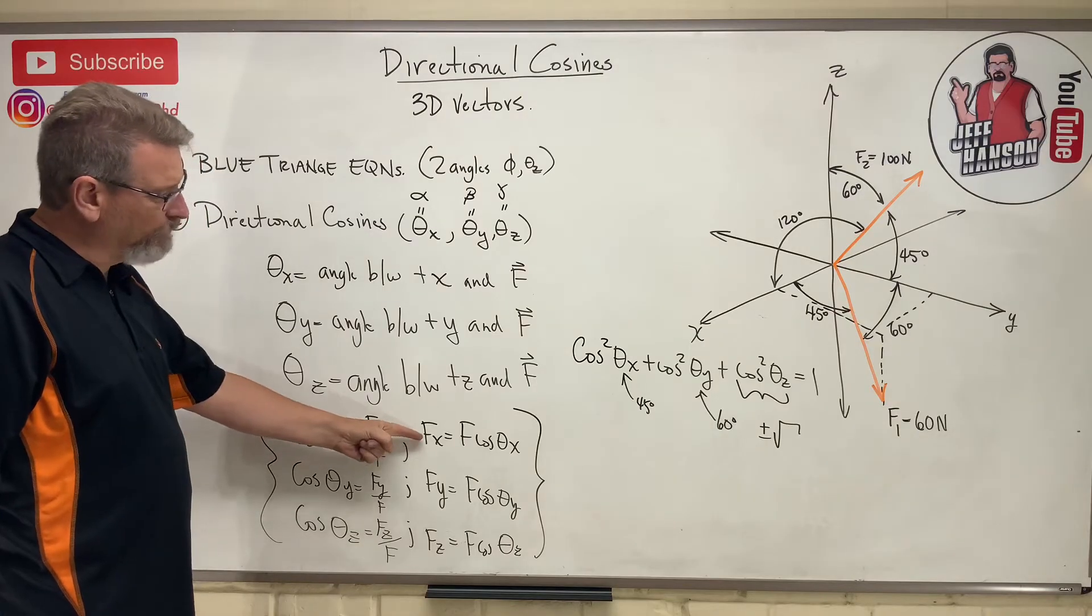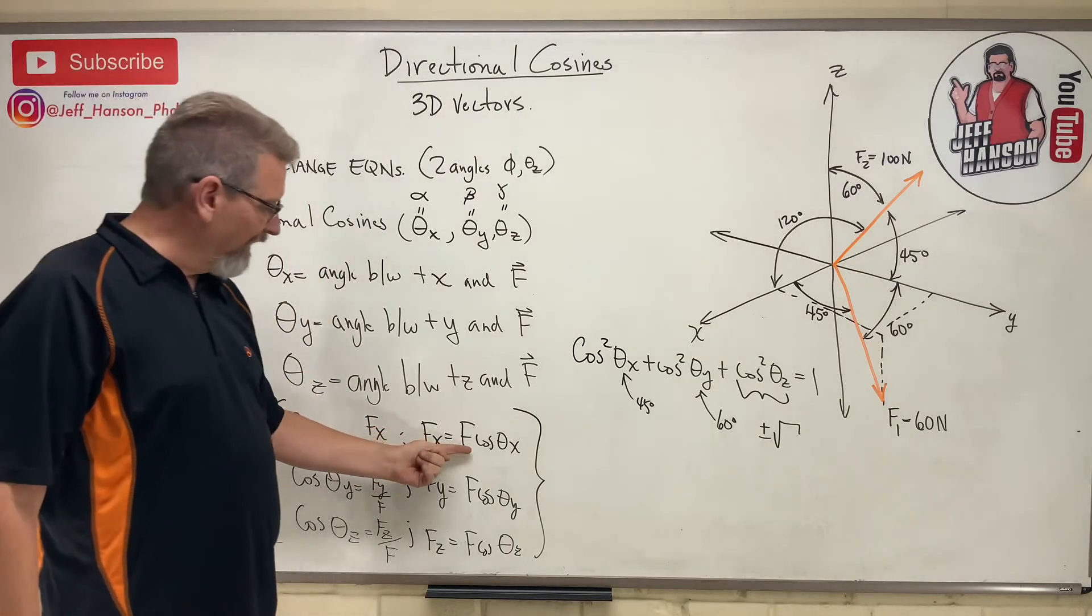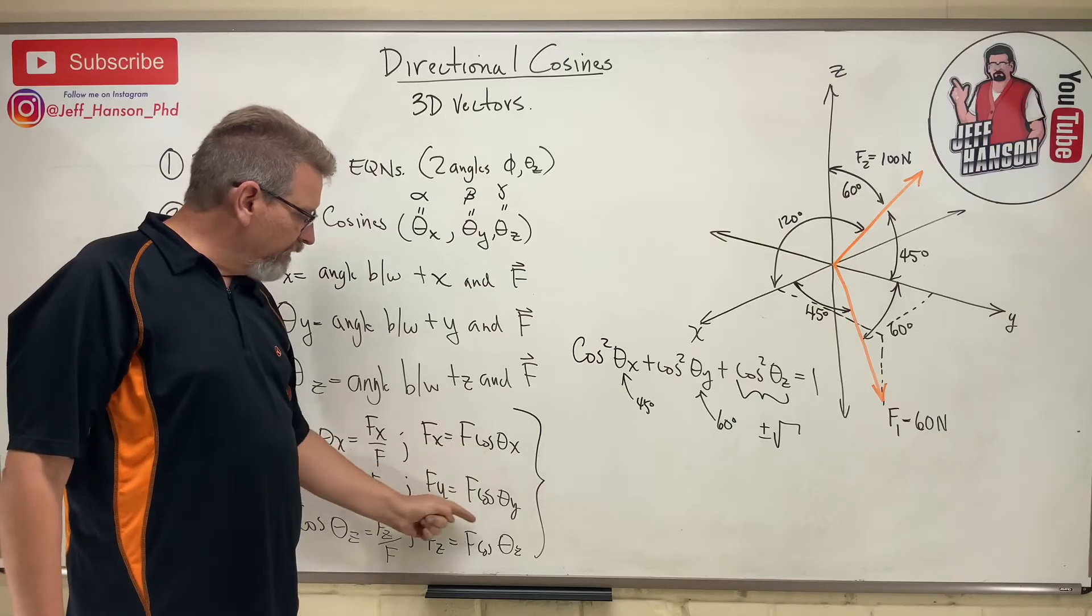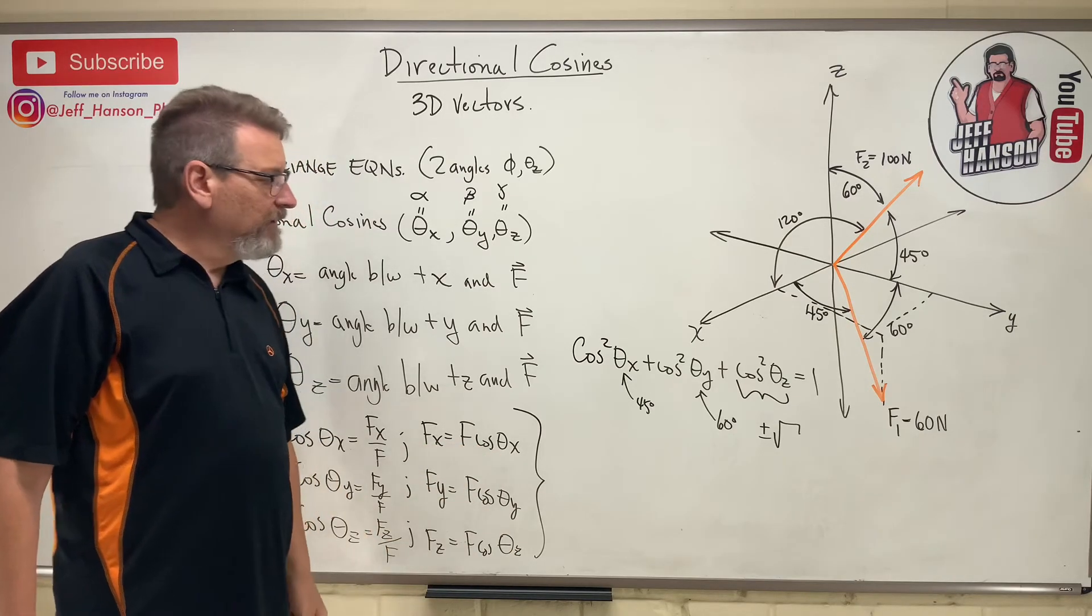That, my friends, is the directional cosine equations. They're a little bit easier to remember than the blue triangle equations because they're all the same. F cos theta, F cos theta, F cos theta.